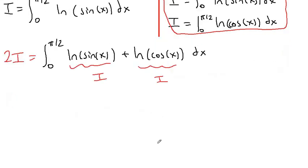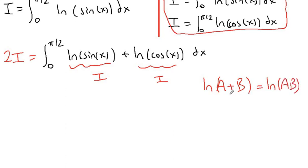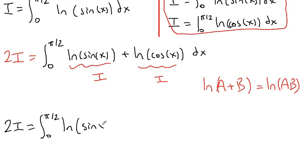Now, we can rewrite our integral as 2i. We can double the i and write the right-hand side as the integral from 0 to pi over 2 of ln of sine of x dx plus ln of cosine of x dx — because this is our i and this is also our i. Using the logarithmic property that ln of a plus ln of b equals ln of a times b, we can compact the summation into a product.